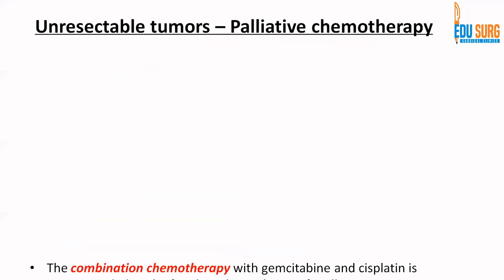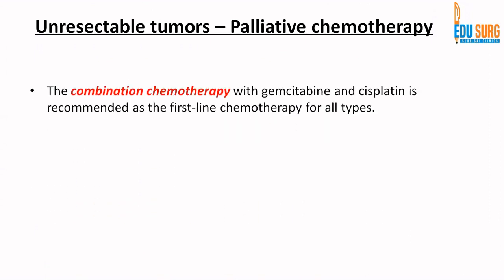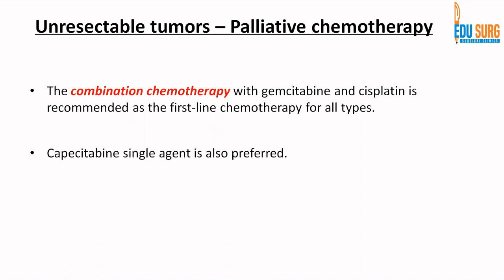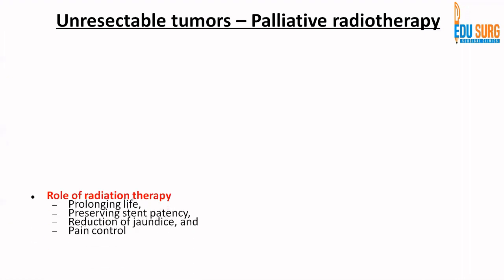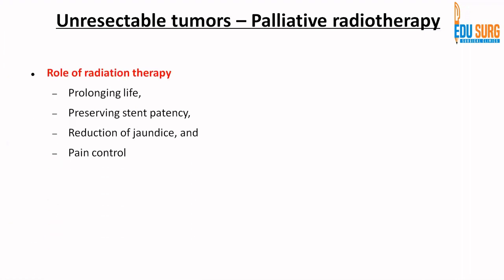There are palliative chemotherapy and radiotherapy options. For biliary cancers, two regimens are most commonly used: gemcitabine-based (combined with cisplatin or nab-paclitaxel) and capecitabine-based — capecitabine being the oral variant of 5-FU. When palliating with chemotherapy, side effects are a very important part of decision-making, as we want to maintain the patient's quality of life with minimum side effects. Palliative radiotherapy has found its role in biliary cancers: it helps preserve stent patency, reduce jaundice, and provide pain control.